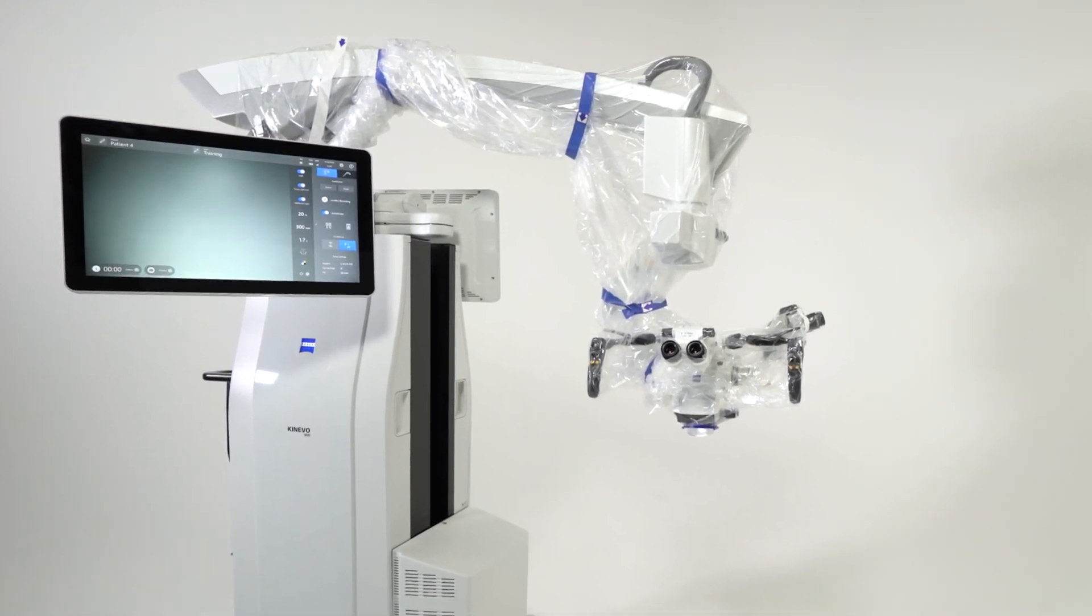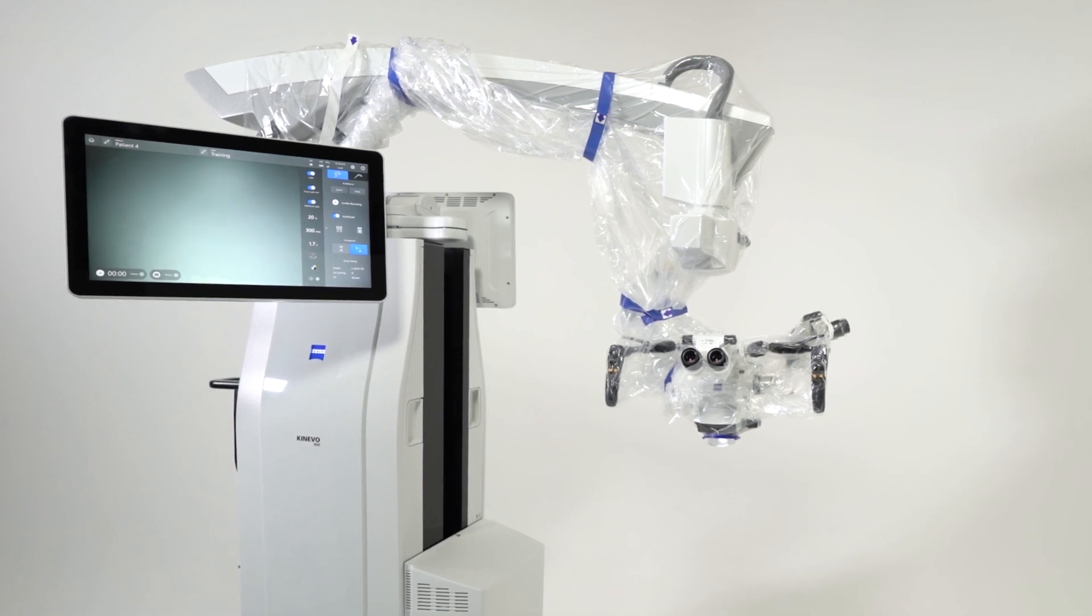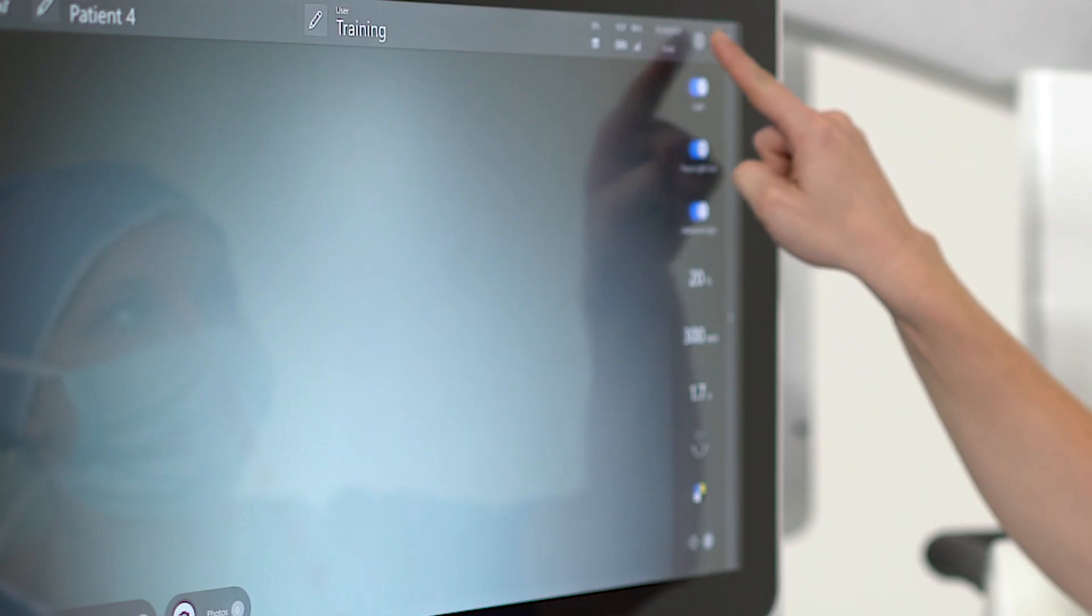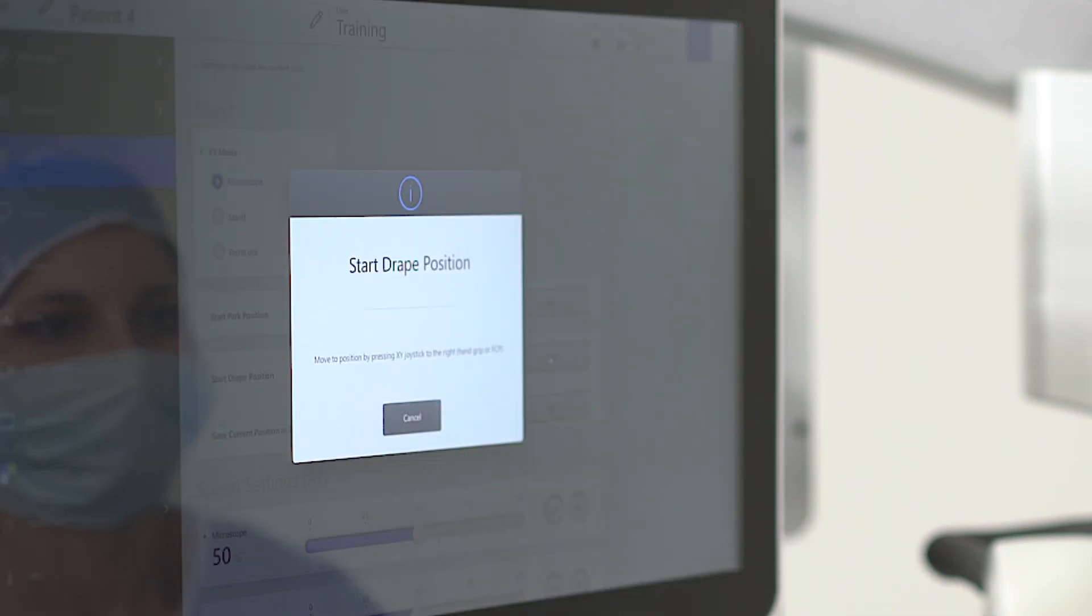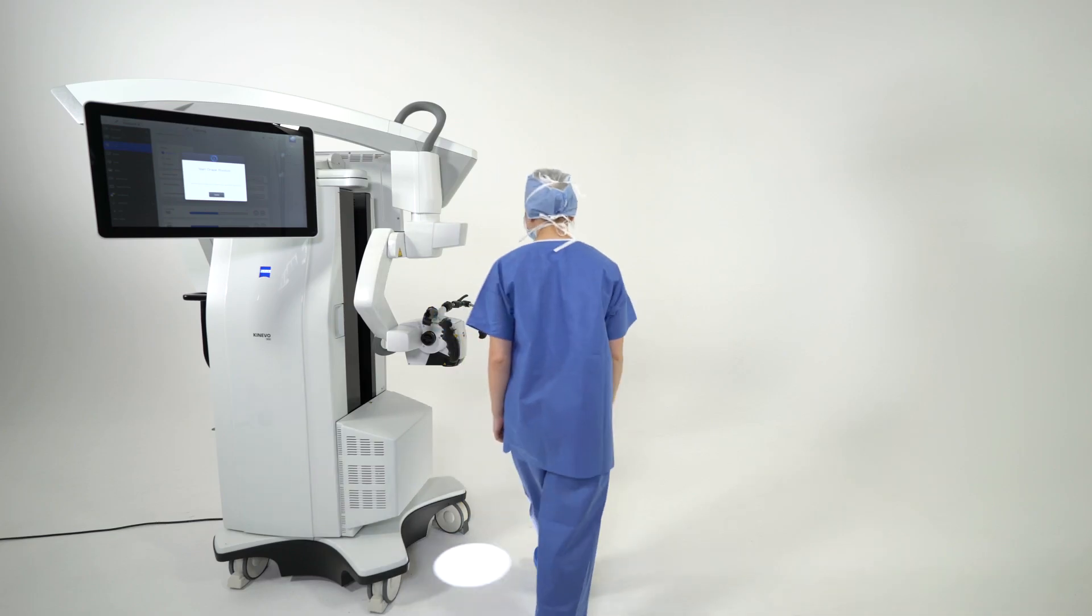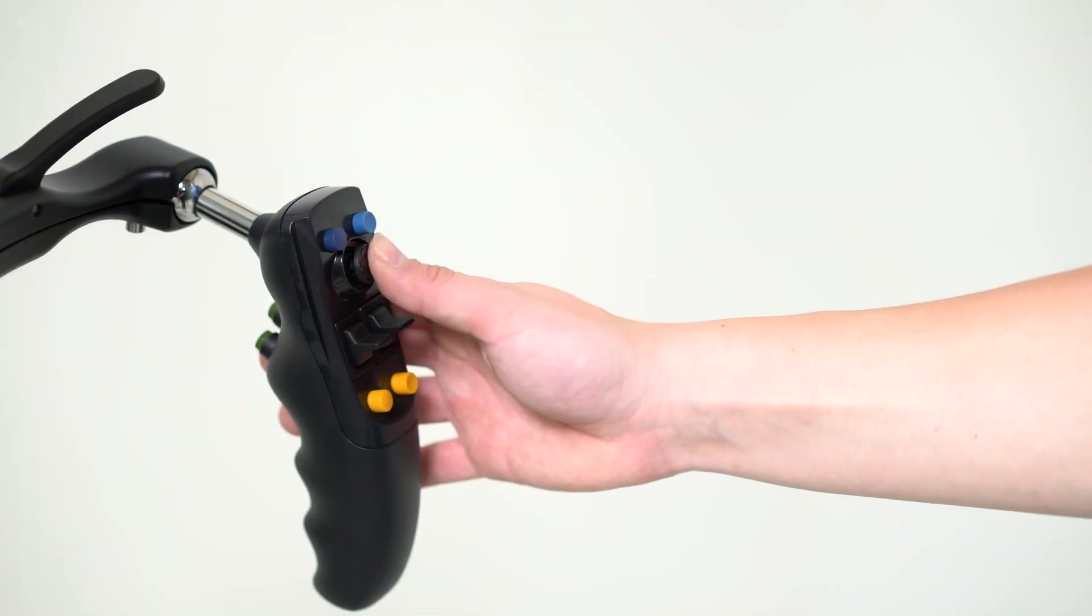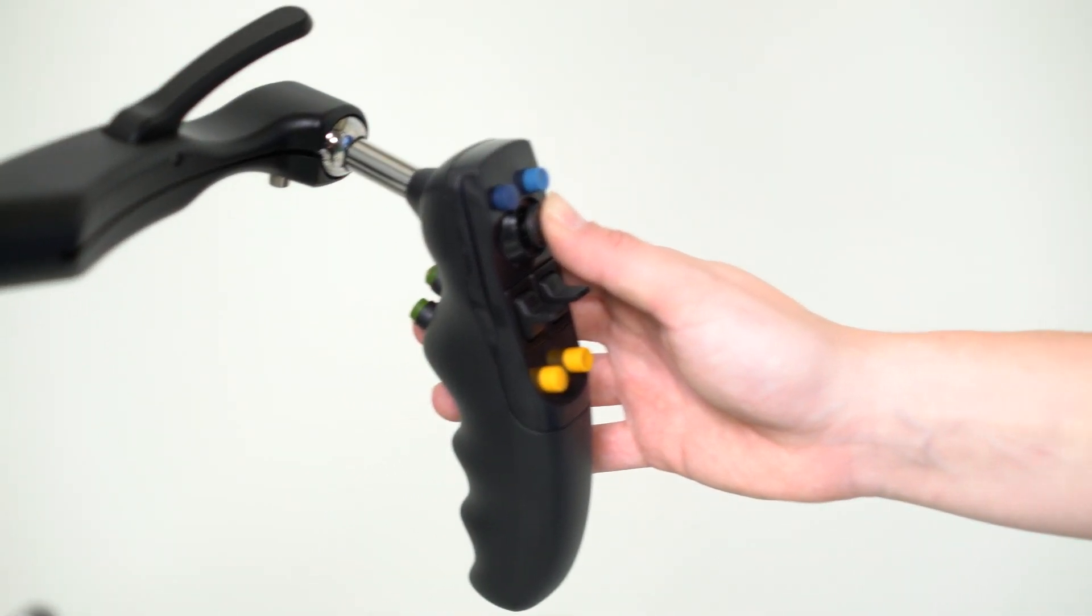To position Zeiss Kenevo 900 in its pre-configured drape position, go to Settings, go to Stand, press Start Drape Position. To move the Zeiss Kenevo 900 in its drape position, press the joystick of the right hand grip to the right.